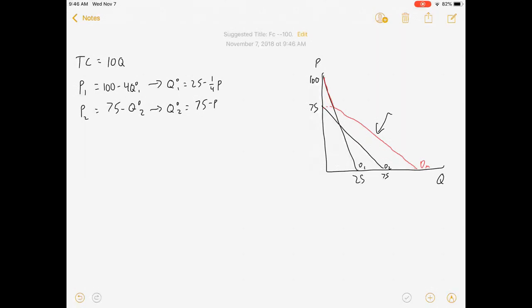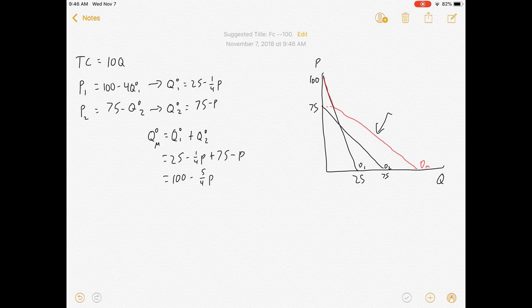And if I want to get the market demand curve, I'm going to add up all those quantities. So QD for the whole market is equal to QD1 plus QD2, which is 25 minus one-fourth P plus 75 minus P. That's 100 minus five-fourths P.